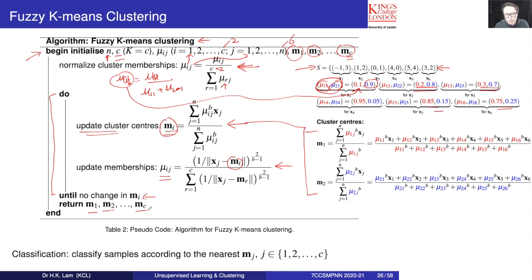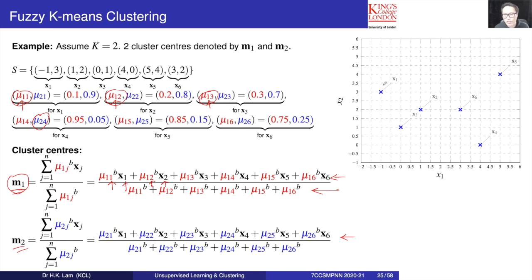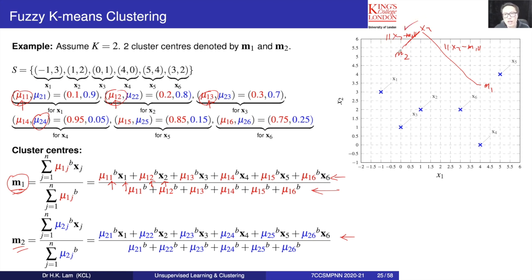After we find M1 through MC as the output of this algorithm, if a new sample comes in, say X7, and we have M1 and M2, we compute the distance between X7 and M1, and X7 and M2, just like in K-mean clustering. We take the one with the smaller distance — so if X7 is closer to M2, then X7 belongs to cluster 2.